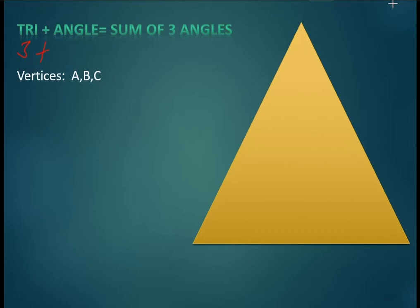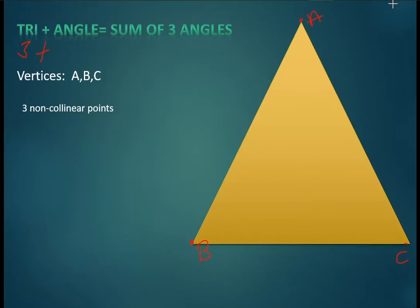A triangle has three vertices — points A, B, and C — where three lines join or cross each other. The three points are always non-collinear points, which means the three points are not on the same line.